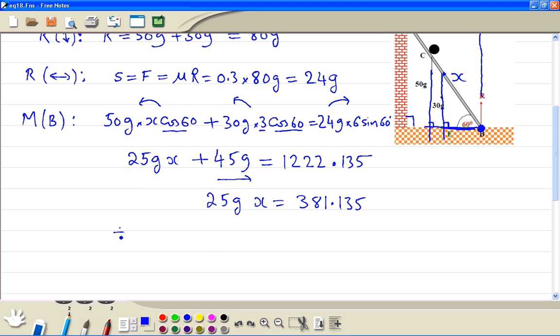Then divide by 25g. We get X to be 3.19. So therefore the distance BC is equal to 3.19 meters.